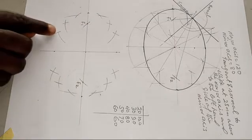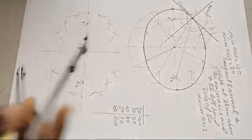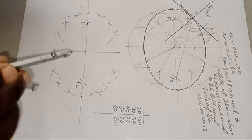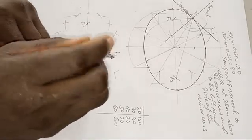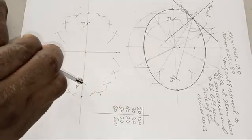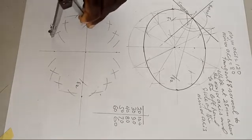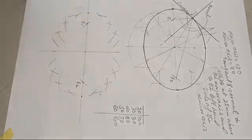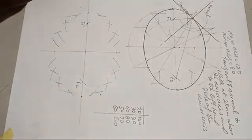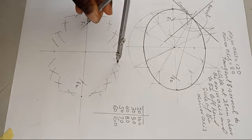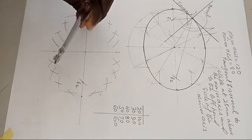Next pair: 50 and 70. Measure 50 on your compass, stay on F2 and mark arcs above and below, then go to F1 and mark arcs above and below. Now measure 70 on your compass. Go to F1 and intersect the arcs, then go to F2 and intersect those arcs.